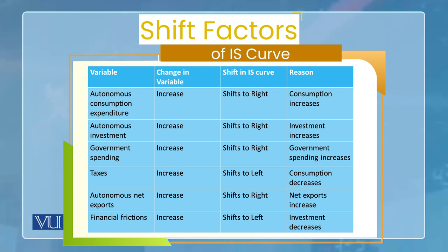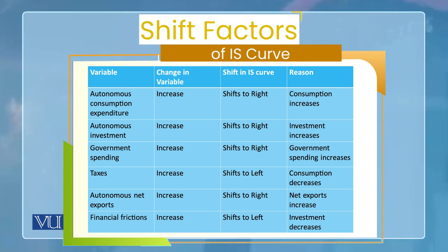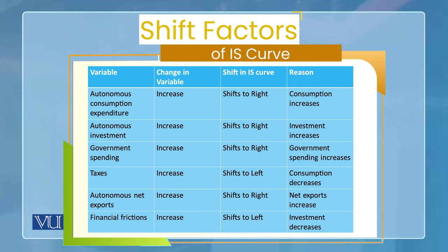The first variable is autonomous consumption expenditure. If it increases, the IS curve shifts to the right, because consumption increases and consumption is a part of total output. Similarly, if autonomous investment expenditure increases, IS also shifts to the right, because investment is also a part of aggregate demand or total output.